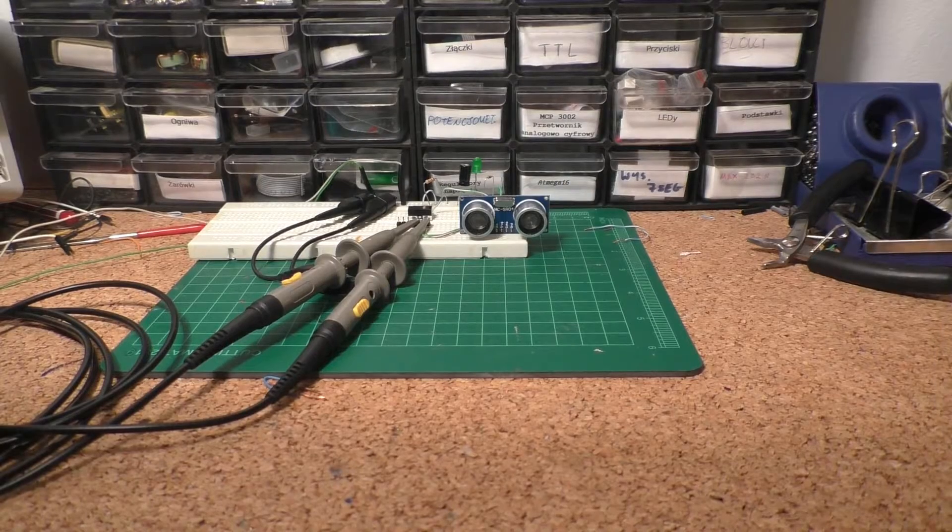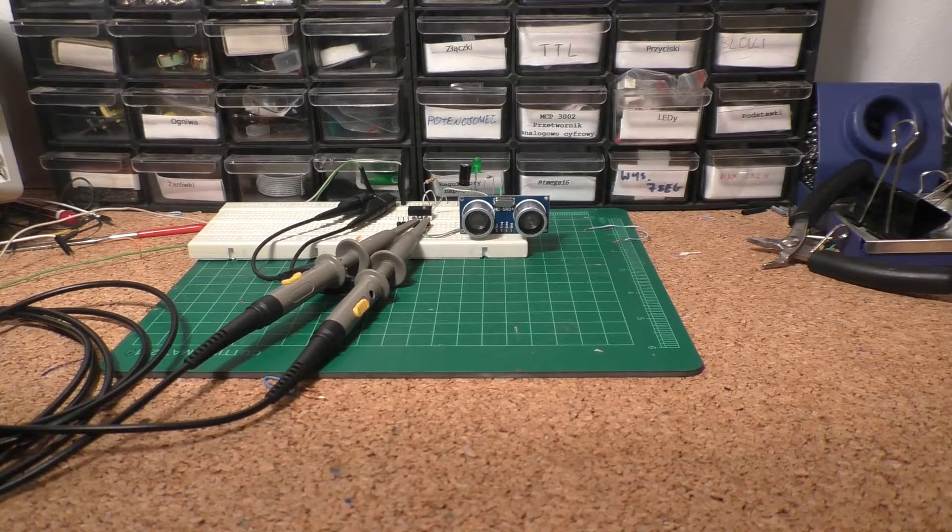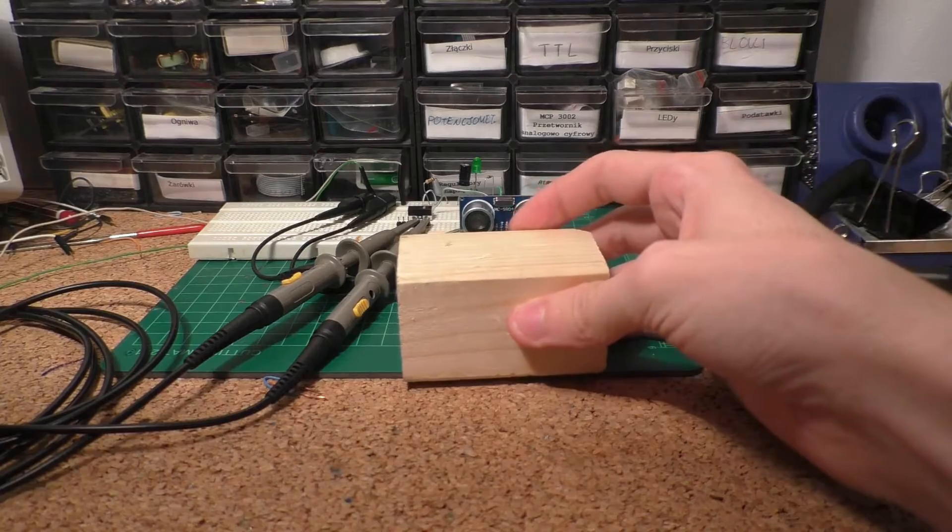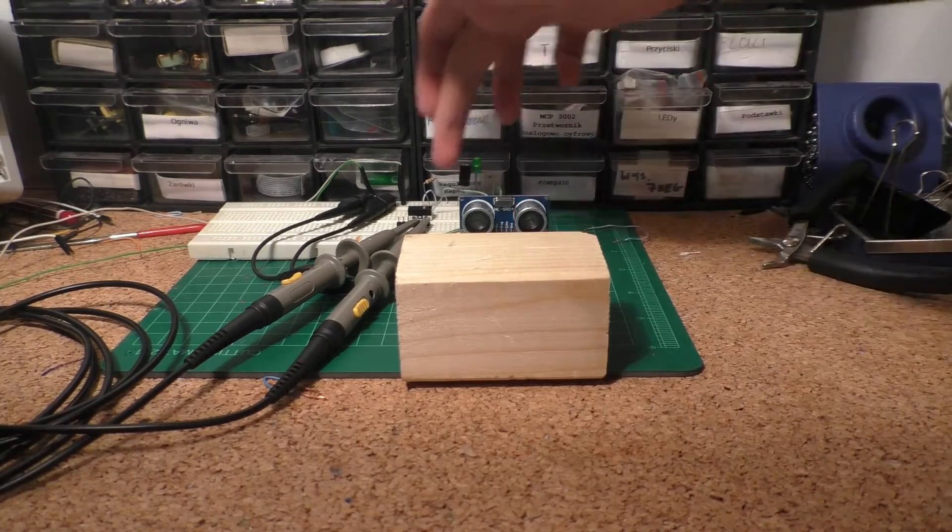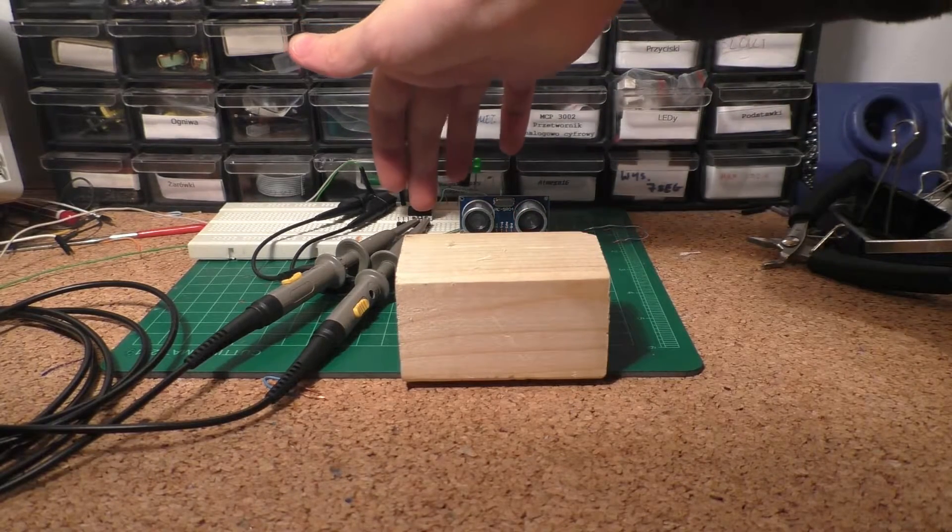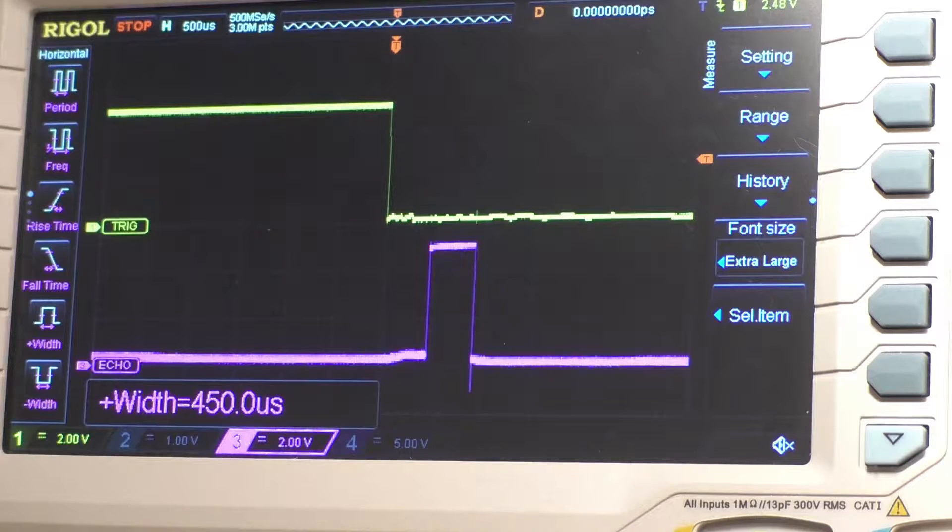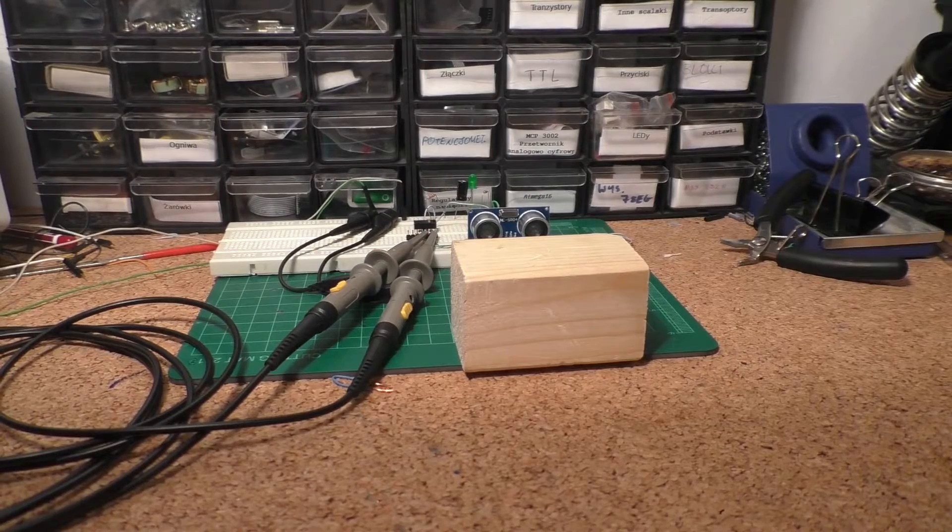OK, so let's place something in front of the sensor and trigger it. So that's our block and we are now triggering the sensor. After triggering the sensor with the falling edge on the trigger line, we can see that a positive pulse appears on the echo line. Let's now change the distance.